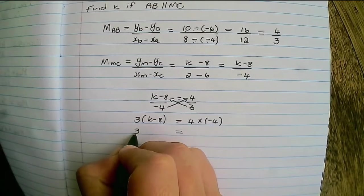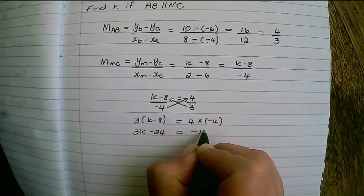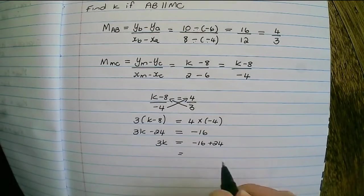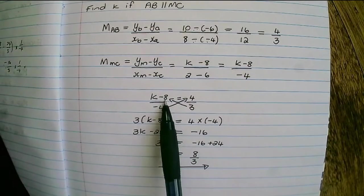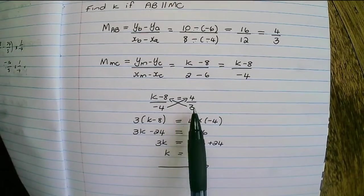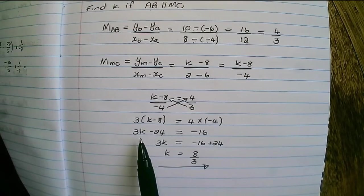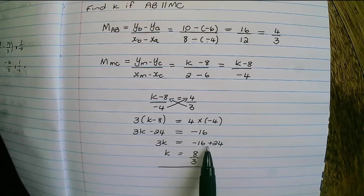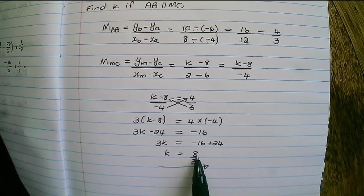Multiplying out gives us 3k minus 24 equals negative 16. To solve for k, I transpose the 24 and divide by 3, which gives k equals 8 over 3.